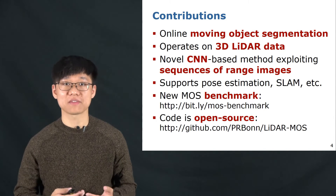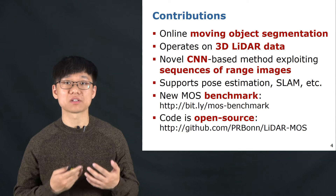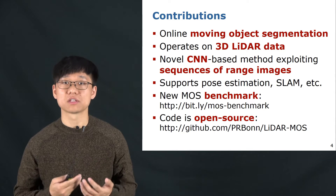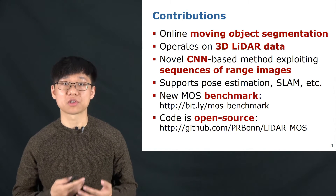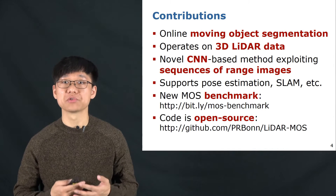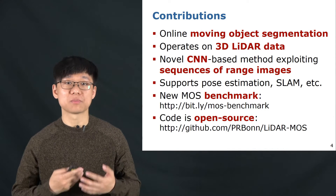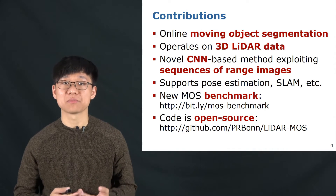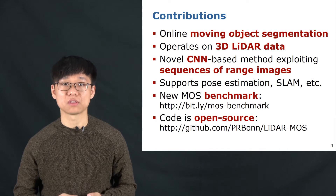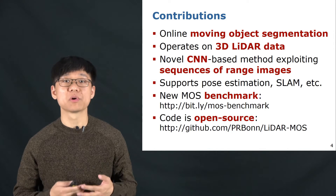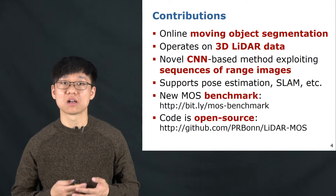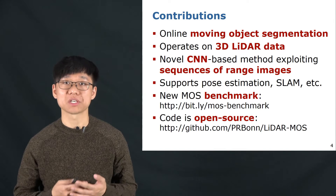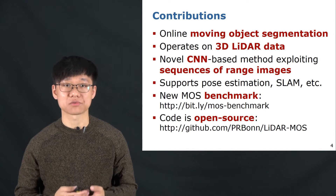The proposed method is based on deep learning and neural networks that exploit sequential LiDAR range images, using both spatial and temporal information to achieve moving object segmentation. The proposed method supports a lot of downstream tasks like odometry, mapping, SLAM, etc.